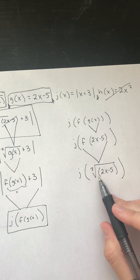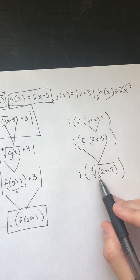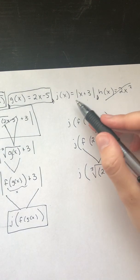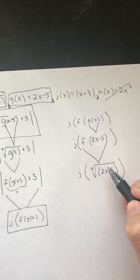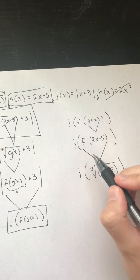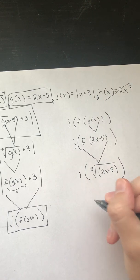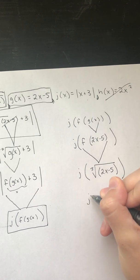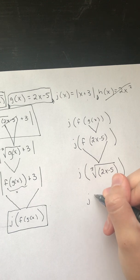j of this gross function. So j as we see is this one. So again, this is gonna act as our x. So we're placing this with this. So j of all of that stuff equals,